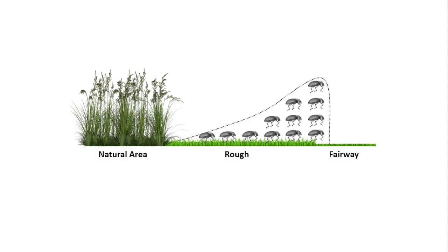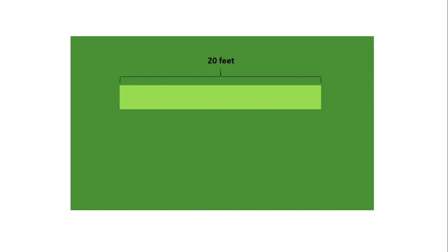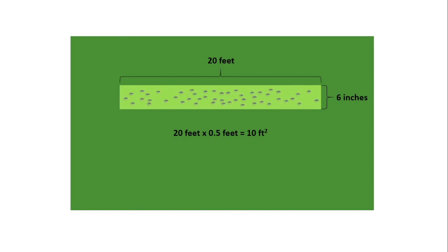Once you detect peak adult activity near playing surfaces, it's time to decide whether management is necessary. While action thresholds do exist for annual bluegrass weevil adults, they're highly variable and you'll need to settle on a threshold suitable for your site. To convert vacuum sampling data to appropriate units, calculate the approximate area of your vacuum passes. In this video, my vacuum passes were each roughly 20 feet long by half a foot wide — that's the width of the vacuum chute — meaning each pass was approximately 10 square feet. One hundred weevil adults collected from a single pass would give 10 weevils per square foot. Use these calculations together with the detection of peak adult activity to decide if and when you will make a management intervention.